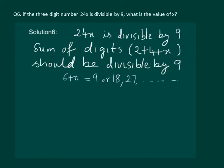Here we know that x is only 1 digit so it can take values only from 0 to 9. So let us equate it to 9. We get x is equal to 3. Hence, 243 is the required number.